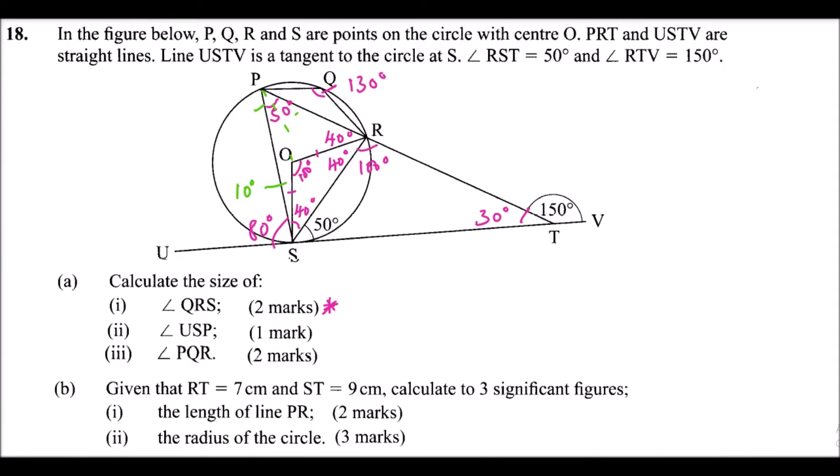So we look at USP. USP, we have already identified it is 80 degrees. Then P, Q, R, we have identified it is 130 degrees. So as long as you have put your values on the diagram, it shows that you have identified the angles, you should be able to get the marks. Although, what is required is for you to state the properties that you have used to get these angles.